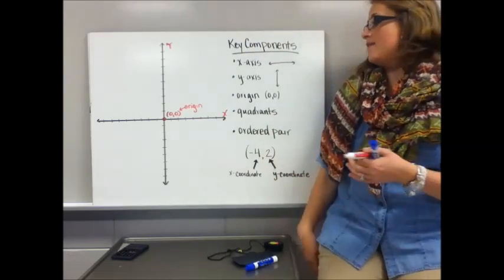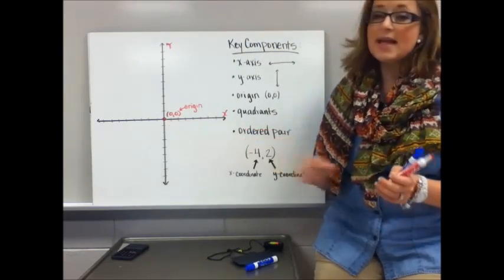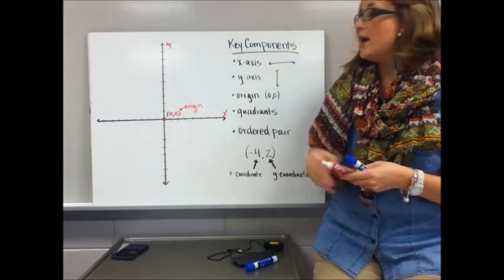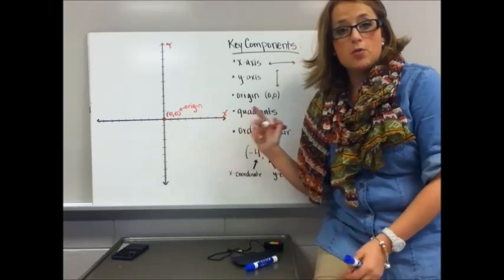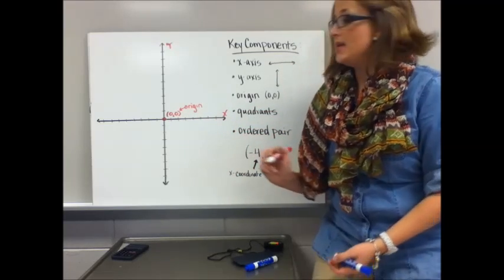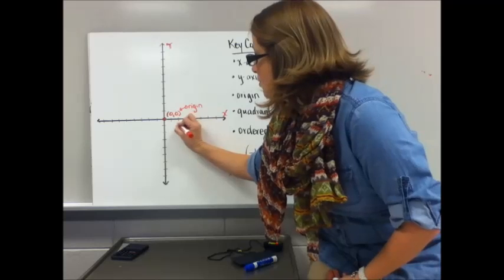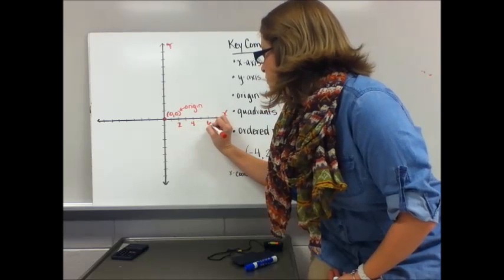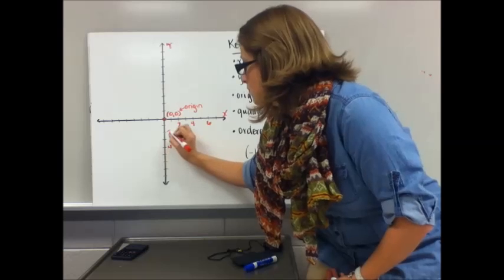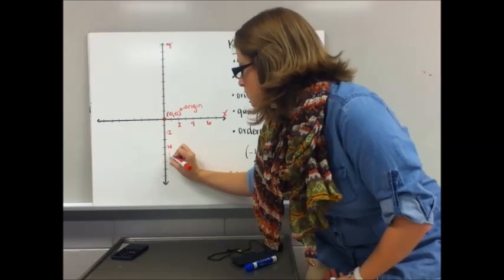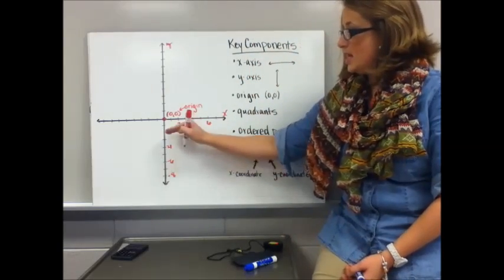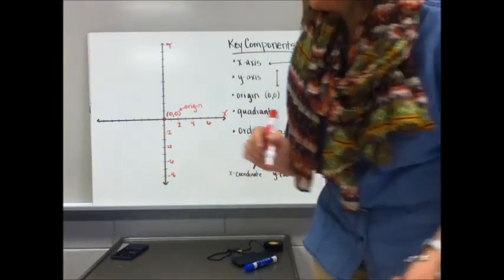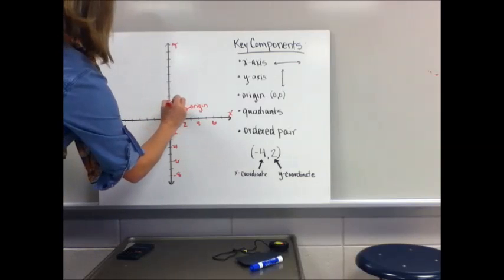You're familiar with the word origin because you know that means the beginning spot of things. We need to label your axis to see what each dash mark is representing. I'm gonna make each dash mark worth one, but in order to not make my coordinate plane too cluttered, I'm only gonna label every other one. You'll notice going down is negative, going to the right is positive, as going up is positive.